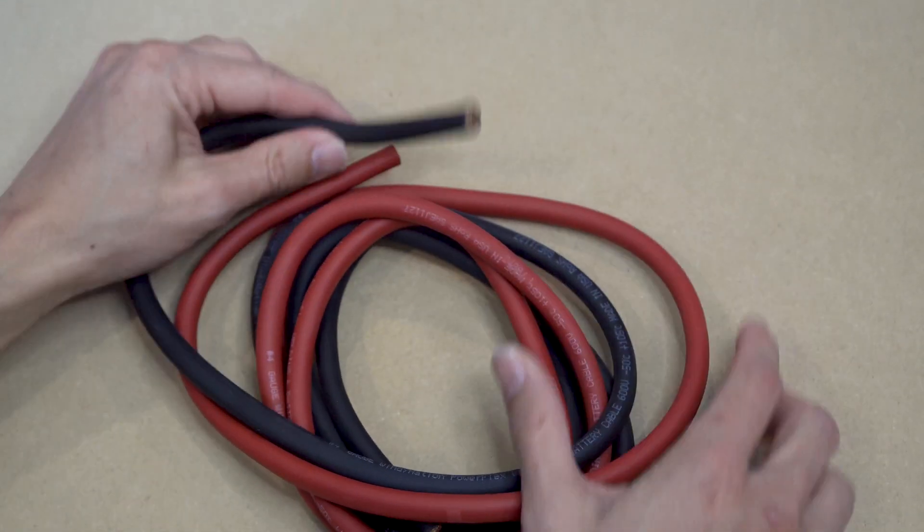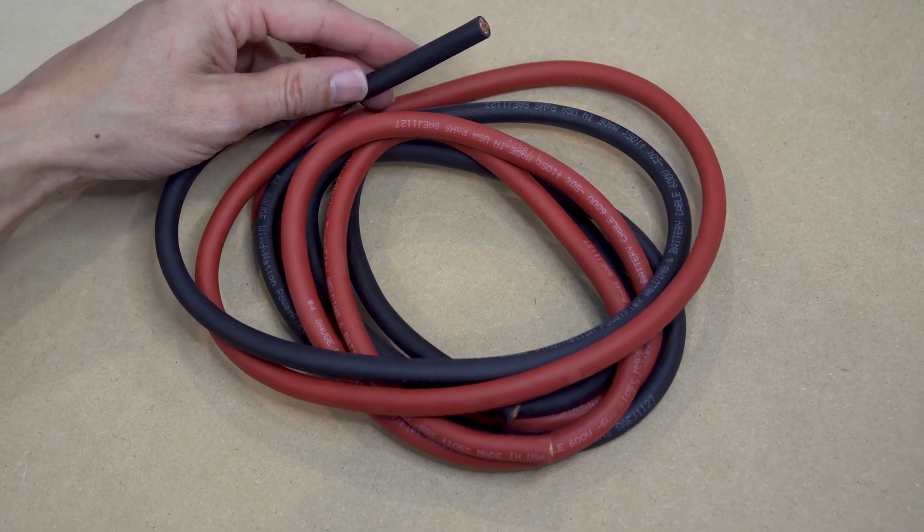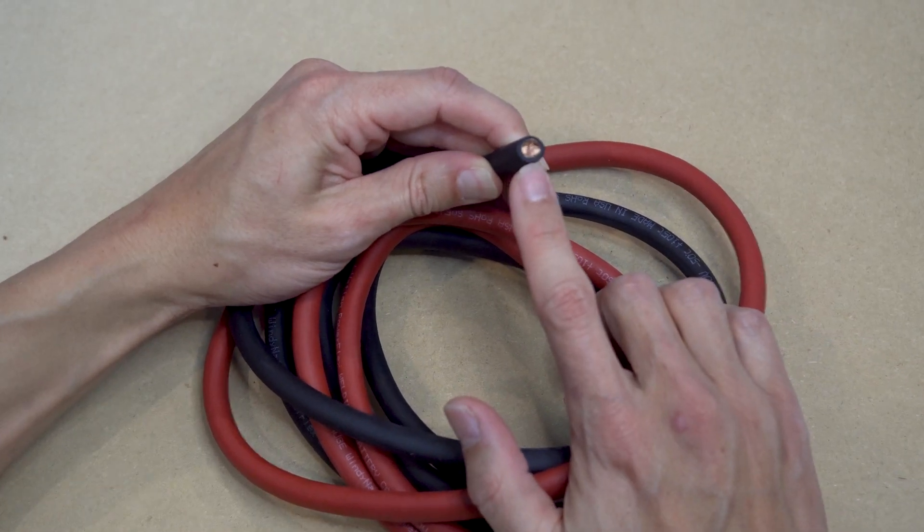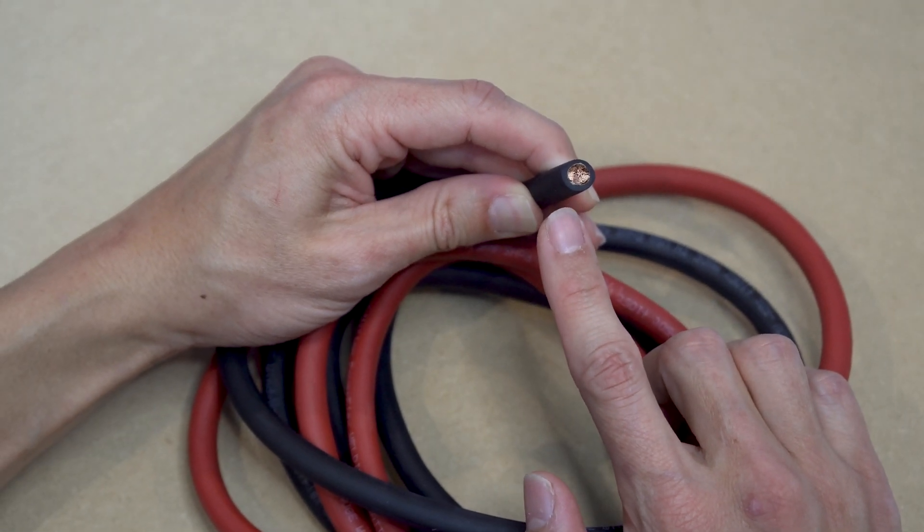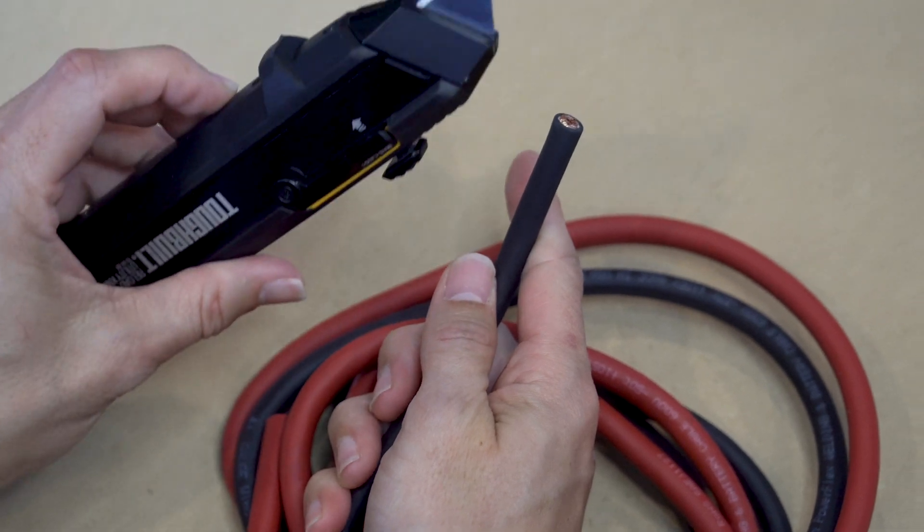One of the reasons for this ultra-flexibility is the high number of individual copper strands inside this wire. Just look at how many tiny wires there are in this cross section. Now, we're going to cut away this insulation so you can get a better look inside. You can cut away this insulation with a simple box cutter.